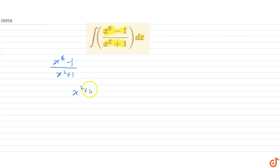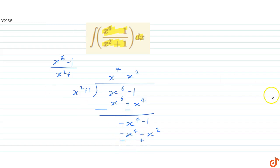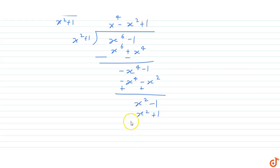So x square plus 1 divides x to the power 6. First take x to the power 4: we get x to the power 6 plus x to the power 4. Subtracting gives minus x to the power 4 minus 1. Next take minus x square: we get minus x to the power 4 minus x square. This leaves x square minus 1. Now take 1: we get x square plus 1, and subtracting gives minus 2.